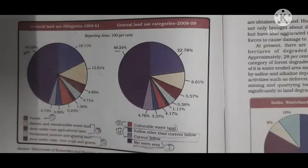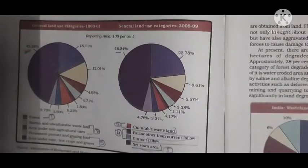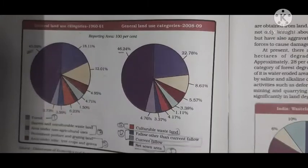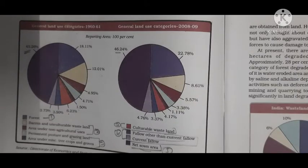Hello everyone, myself Abhijit Sina and today I am here with a new topic from Chapter 1, Resource and Development. In the previous video, I had already discussed about land utilization in India and land utilization in the world. In the world, there are 5 factors or 5 ways through which we utilize land.